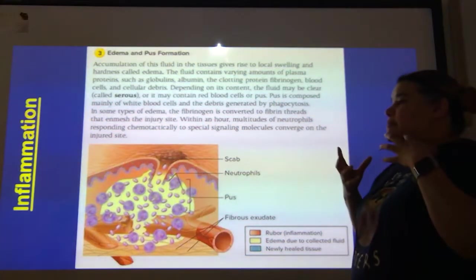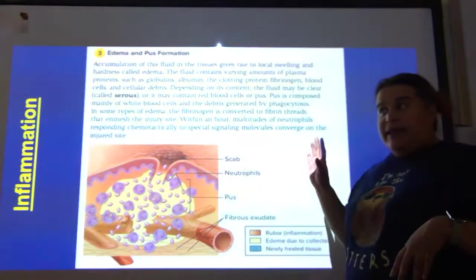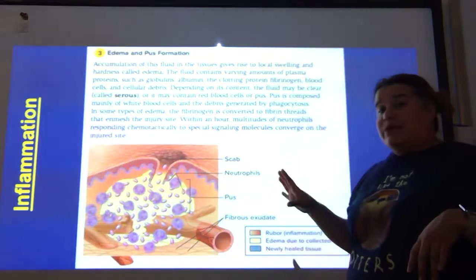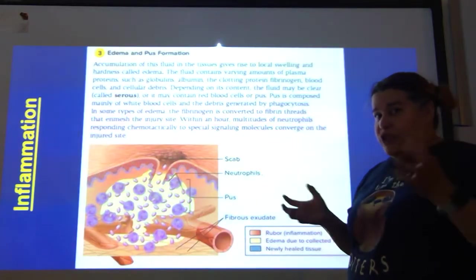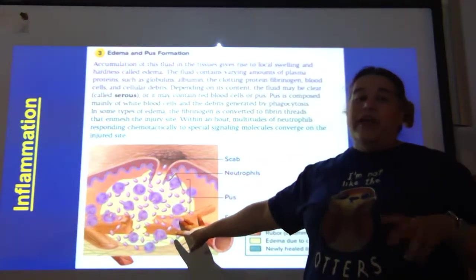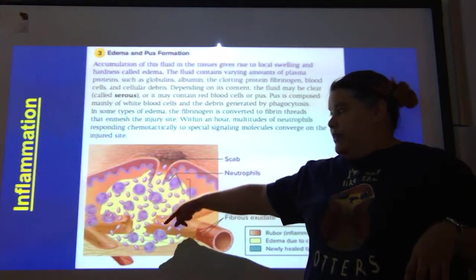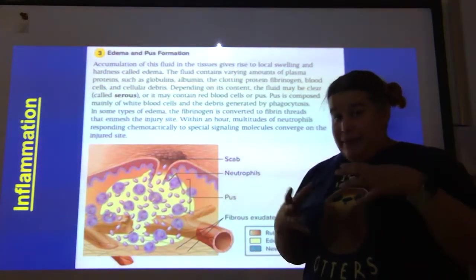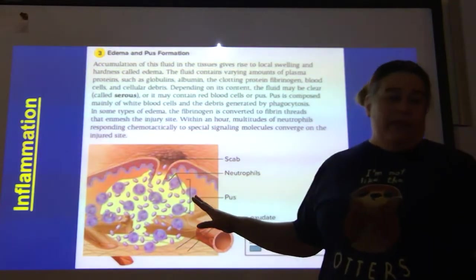Pus is generated by our phagocytes. During this time frame, we've been releasing chemotactic factors, so neutrophils have been attracted and attracted to the site. In the picture, you can see a very high number of neutrophils now at the site of invasion. All of those bacteria need to be eliminated, and having phagocytes come to that place allows us to get rid of them.